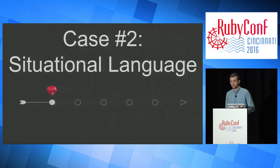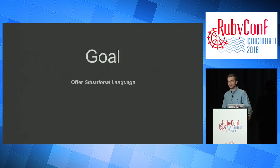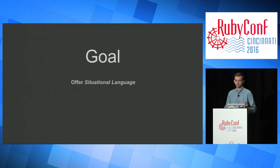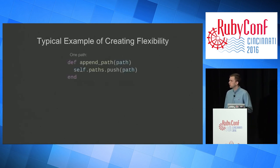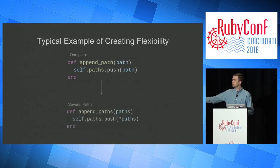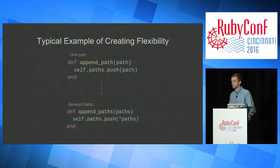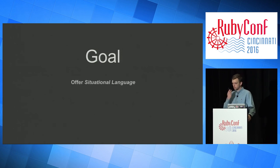Moving on to case number two: situational language. I'll define it as context-specific method names that rely on one implementation. We want a flexible interface for our library, so we may want to offer multiple method names, but they still rely on one single implementation. A typical way to create flexibility is very iterative — you define a pin path method, pass in a path, push it onto a paths variable. If you have several paths, you pass in an array, smash up that array, push it onto the paths variable. There isn't anything wrong with this, but it's repetitive. It would be nice to get both at the same time and still offer this situational language.